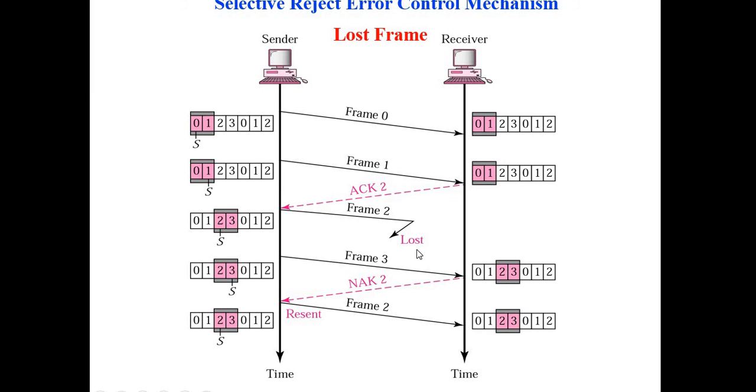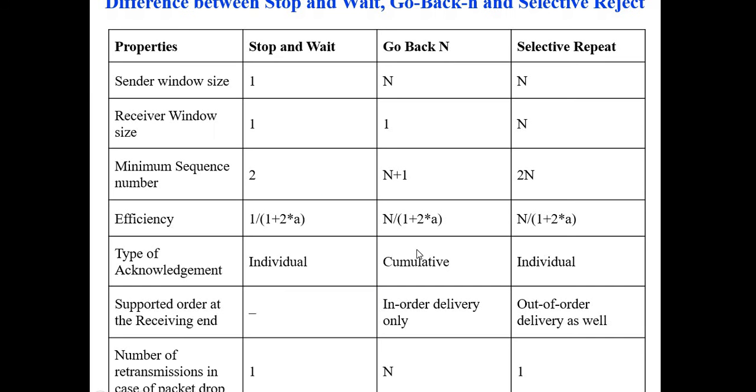So the difference between stop and wait, go back N and selective repeat ARQ. Stop and wait ARQ, the sender and receiver window size is 1. Go back N, it's N for sender window size. Receiver window size is 1. The receiver is expecting one frame only in go back N ARQ. Whereas in selective repeat, same window size of sender can be used in receiver side also.